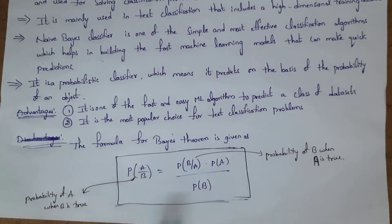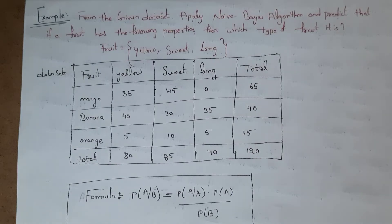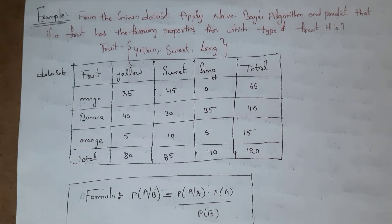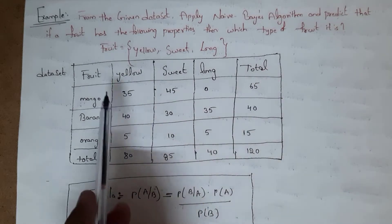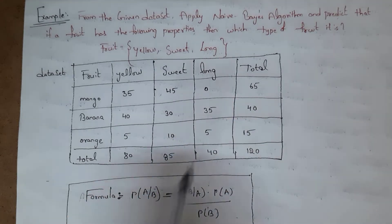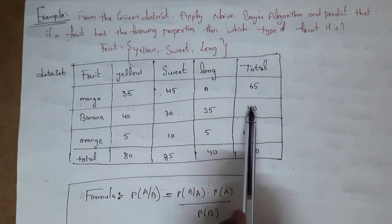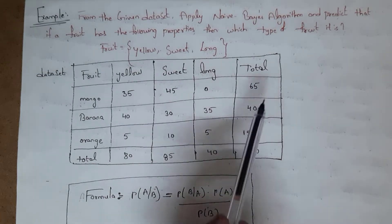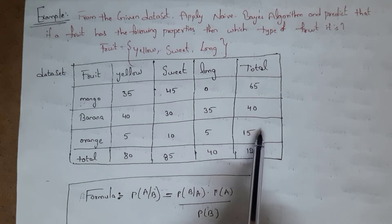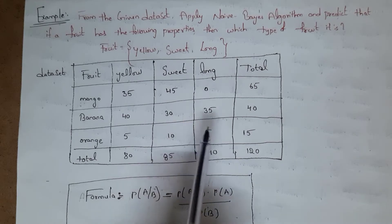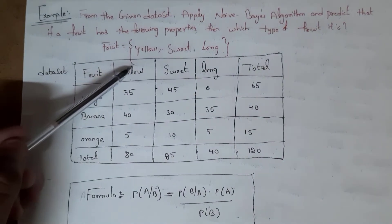I will explain one problem which we need to solve. In the given table there are three types of fruits: mango, banana, and orange. There are 65 mangoes total — 35 are yellow, 45 are sweet, and 0 are long. There are 40 bananas total — 40 are yellow, 30 are sweet, and 35 are long. There are 15 oranges total — 5 are yellow, 10 are sweet, and 5 are long.